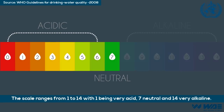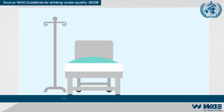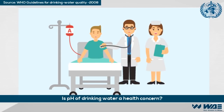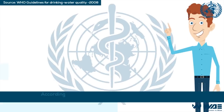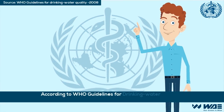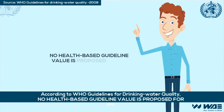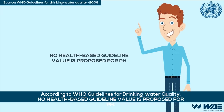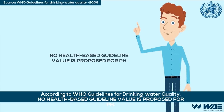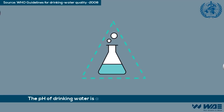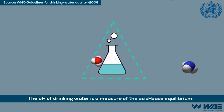Is pH of drinking water a health concern? According to WHO guidelines for drinking water quality, no health-based guideline value is proposed for pH. The pH of drinking water is a measure of the acid-base equilibrium.